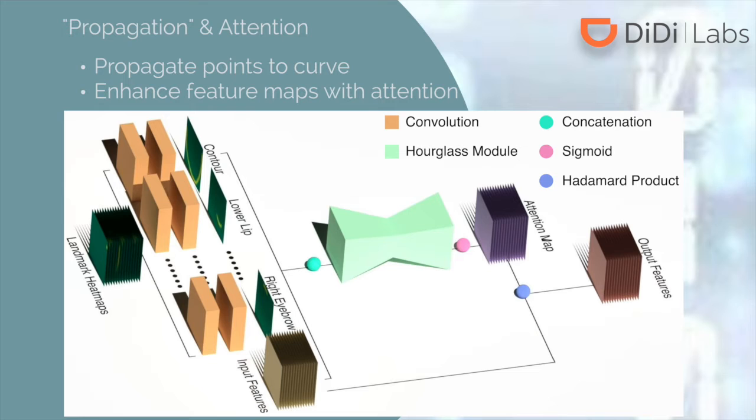Moreover, the boundary heatmaps can be further exploited with the attention mechanism to make our network focus more on features where the boundaries lie.